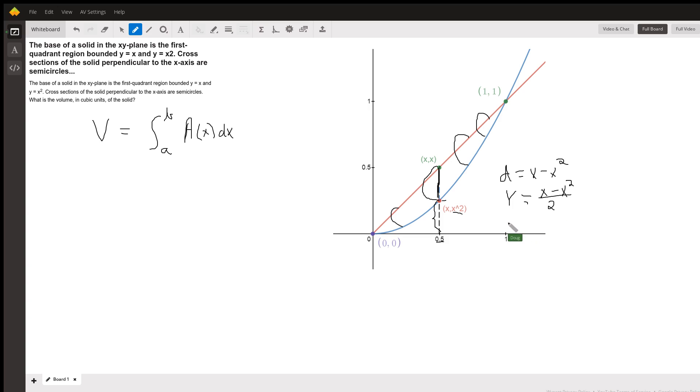How do you find the area of the circle? Well, it's pi times the radius squared. So I have x minus x squared all over 2, the quantity squared.